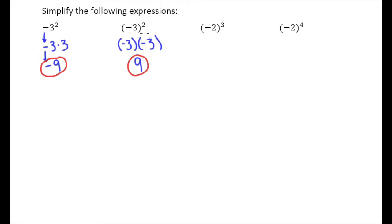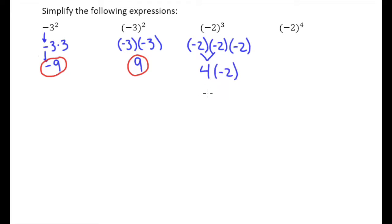We do have to be careful — just because we see parentheses does not necessarily mean the answer will automatically be positive. Take negative 2 to the third power: it means negative 2 times negative 2 times negative 2. Multiplying the first two gives positive 4, but positive 4 times negative 2 is negative 8. An odd power gives us a negative result, because we're multiplying the negative by itself an odd number of times.